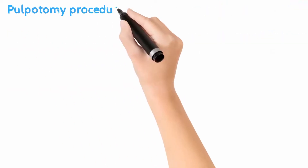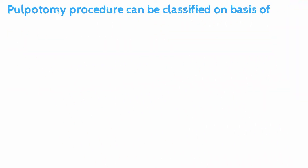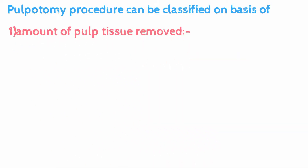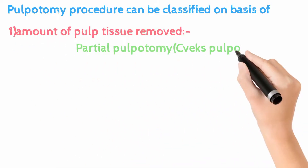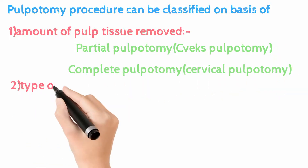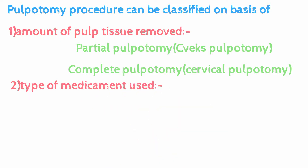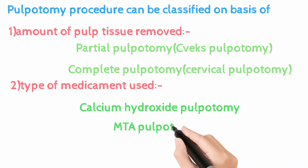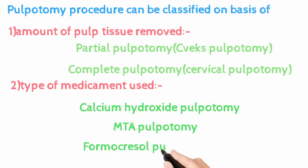Pulpotomy is classified based on: (1) amount of pulpal tissue removed — partial pulpotomy, also called Cvek pulpotomy, and complete pulpotomy, also called cervical pulpotomy; and (2) type of medicament placed — calcium hydroxide pulpotomy, MTA pulpotomy (MTA: mineral trioxide aggregate), and formocresol pulpotomy.